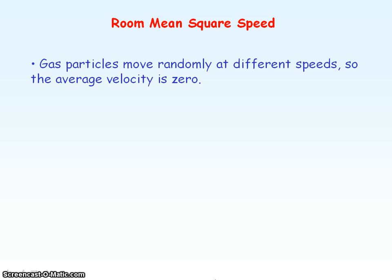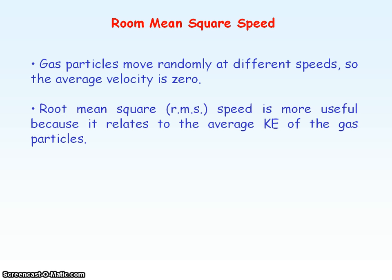Gas particles move randomly at different speeds and in all directions, so their average velocity is zero. That's not very useful. So we use root mean square speed because it relates to the average kinetic energy of the gas particles.